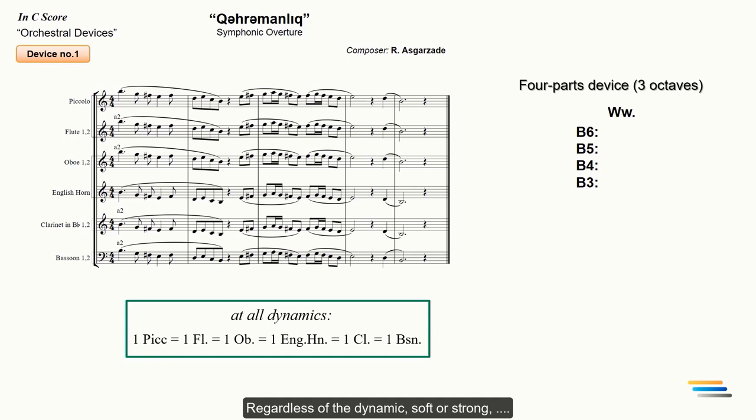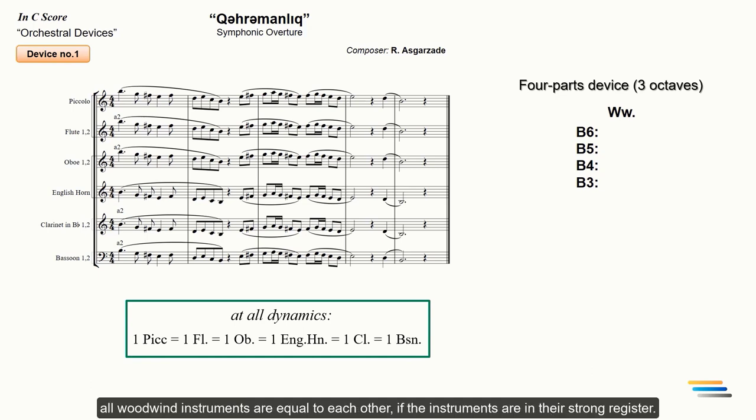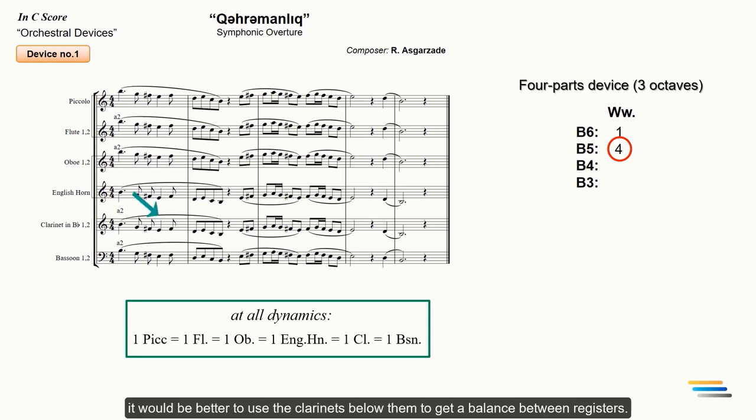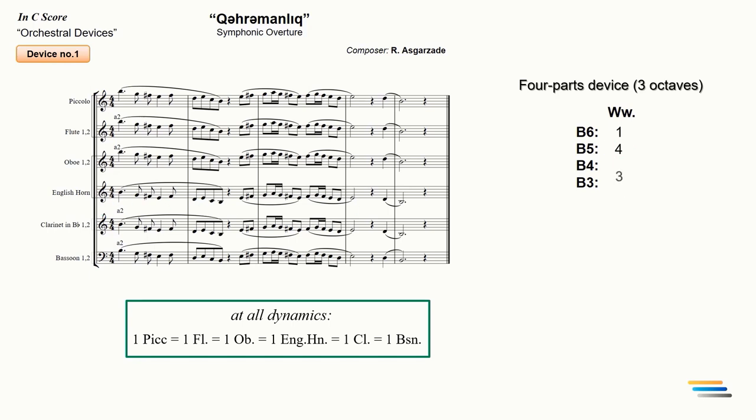Regardless of the dynamic, soft or strong, all woodwind instruments are equal to each other, if the instruments are in their strong register. The piccolo starts the melody from the B6. Two flutes and two oboes start the melody at B5. The English horn takes the B4. The clarinet can play the melody in both B5 and B4. Since the B5 register is already used by two flutes and two oboes, it would be better to use the clarinet below them to get a balance between registers.